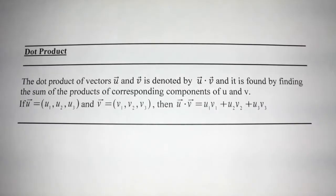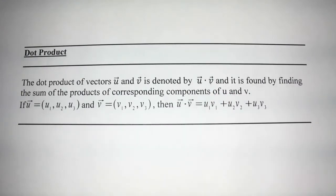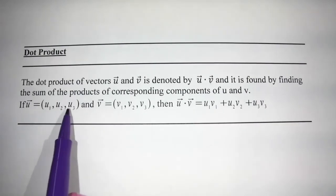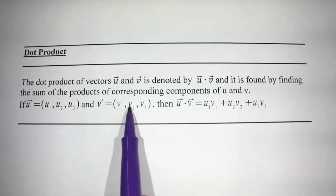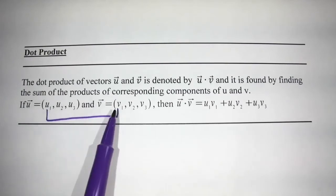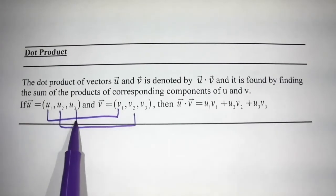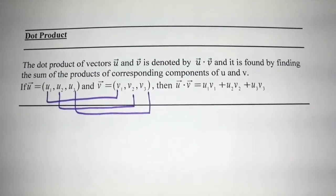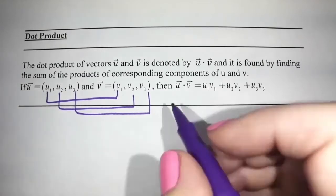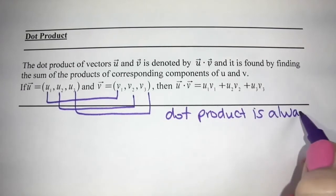Dot product for u and v is denoted by u dot v. It's found by finding the sum of the products of the corresponding components of u and v. So we have u = (u1, u2, u3) and v = (v1, v2, v3), and we multiply the corresponding components: u1 times v1 plus u2 times v2 plus u3 times v3. Because you're adding up all of these numbers, dot product is always going to be a scalar, or a number.